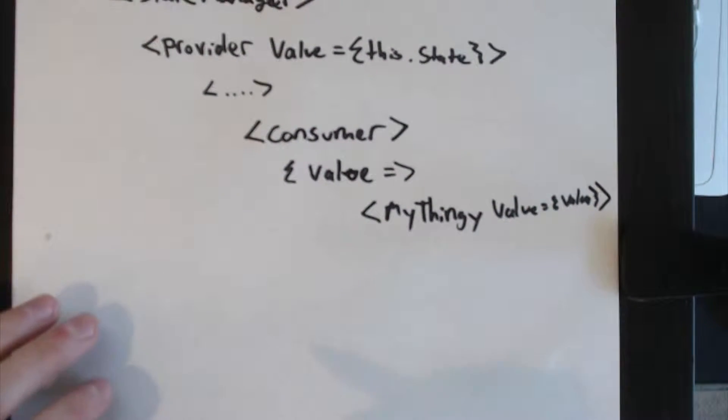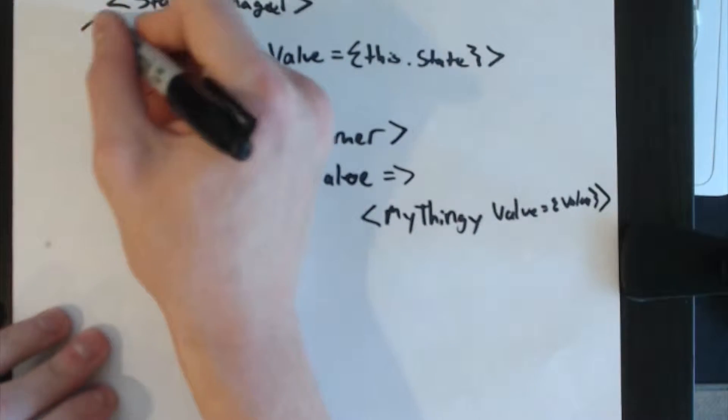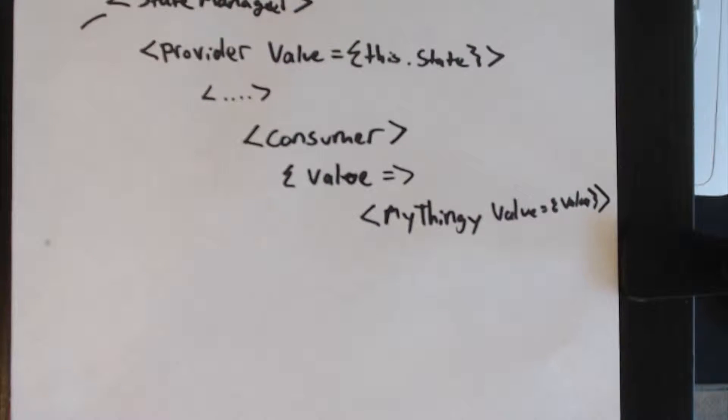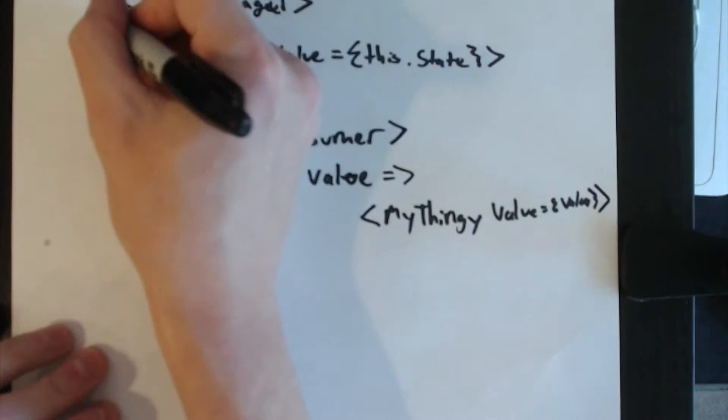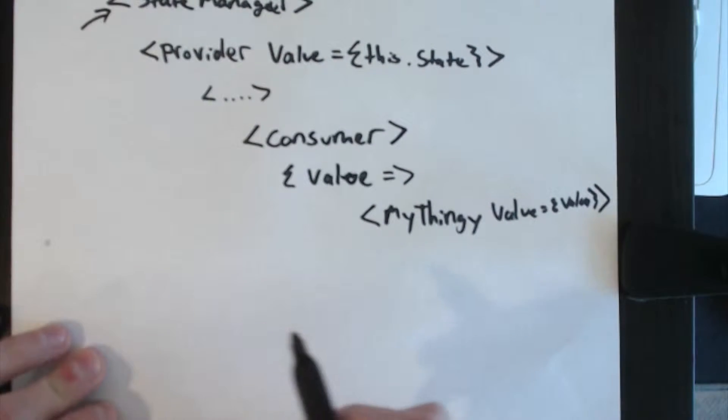So that's basically how context works. It's kind of like a portal where you can put a value in at the top of the tree and then get it somewhere down lower in the tree without having to explicitly pass it each level all the way down.